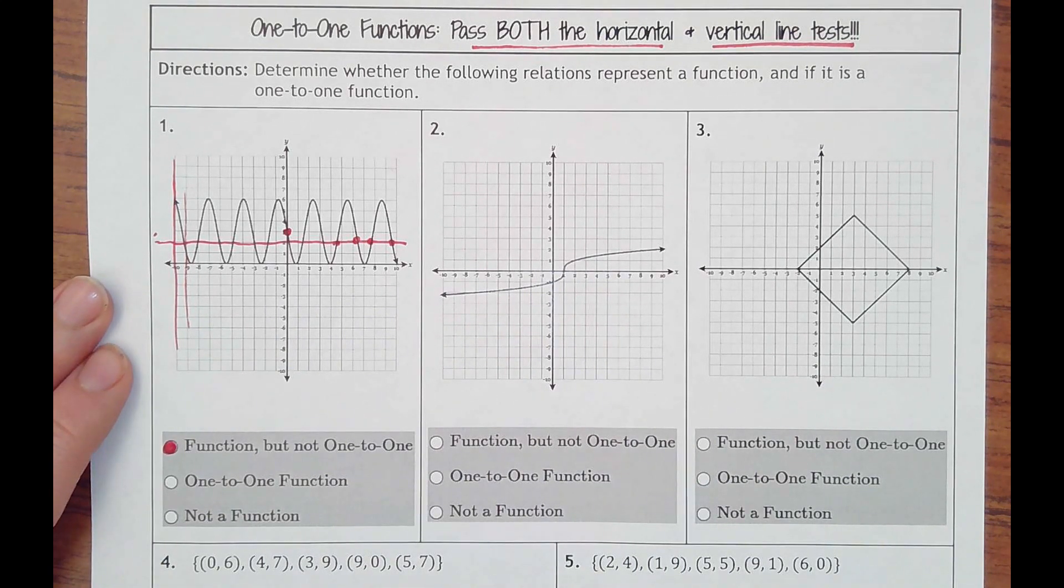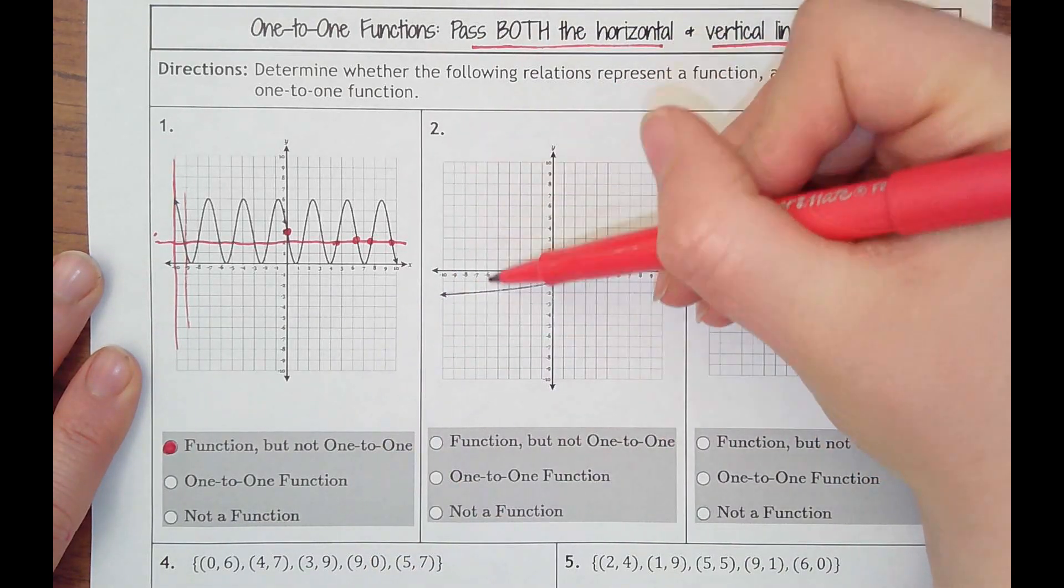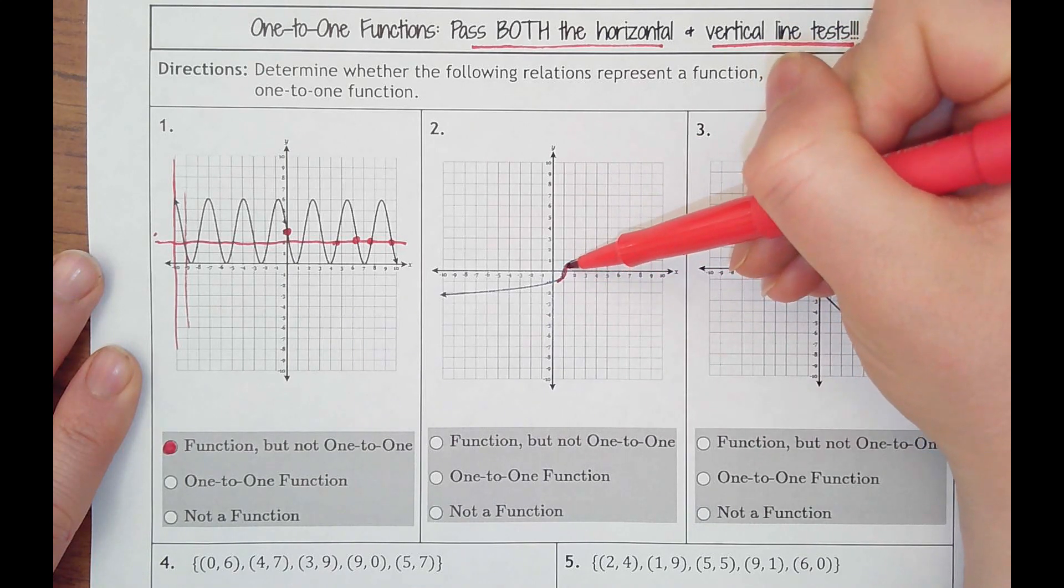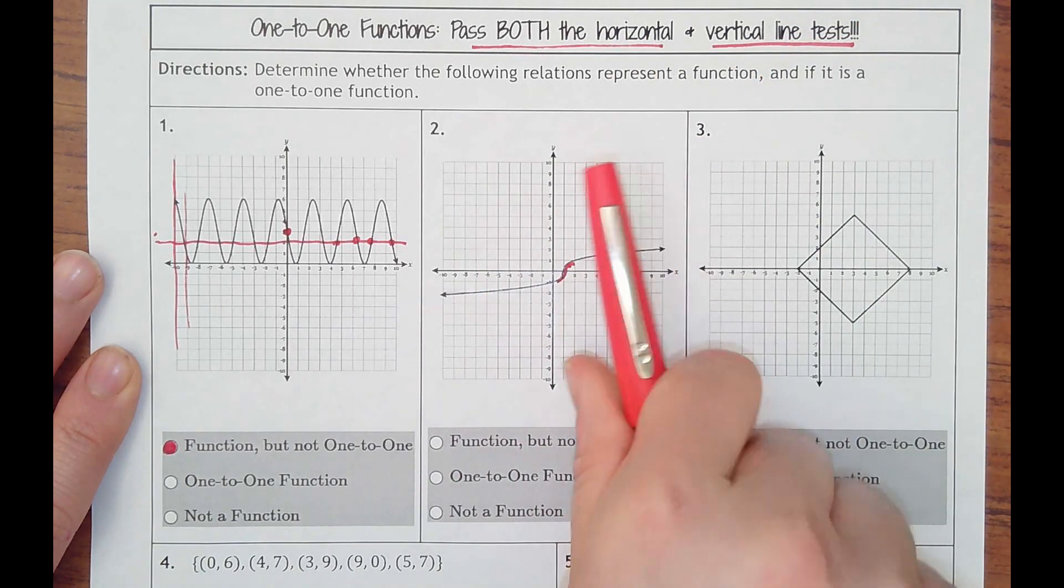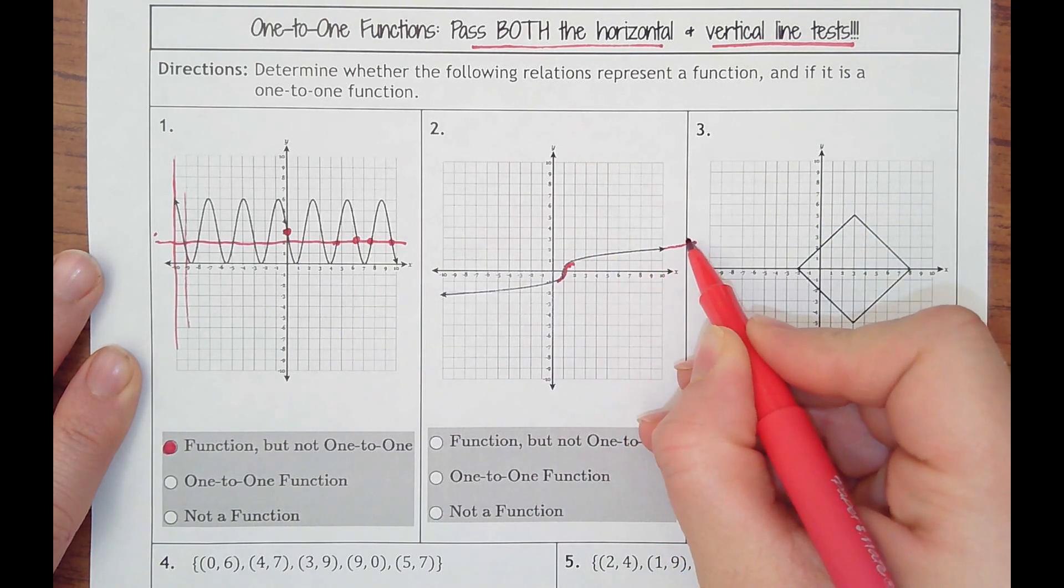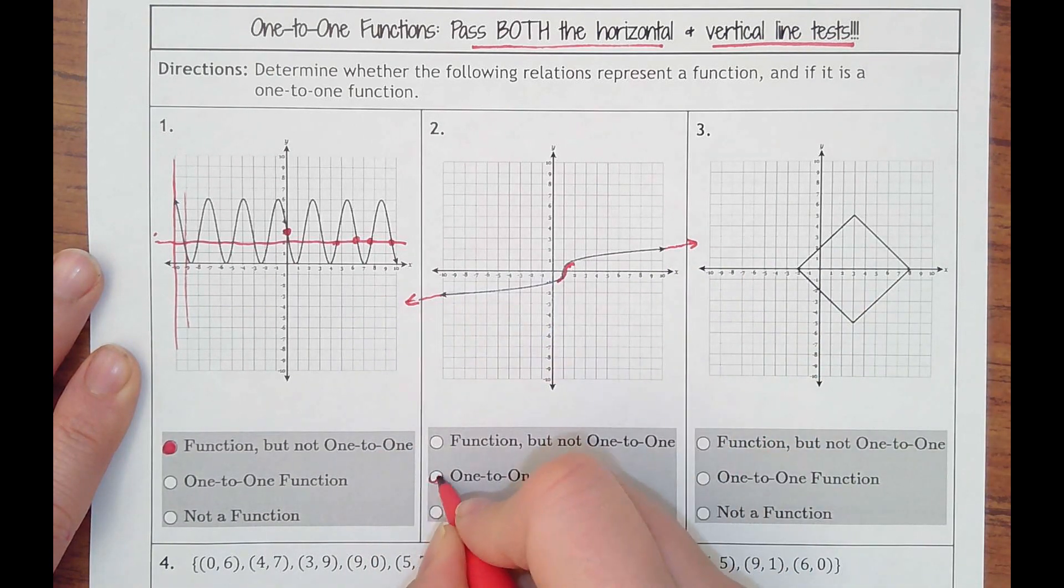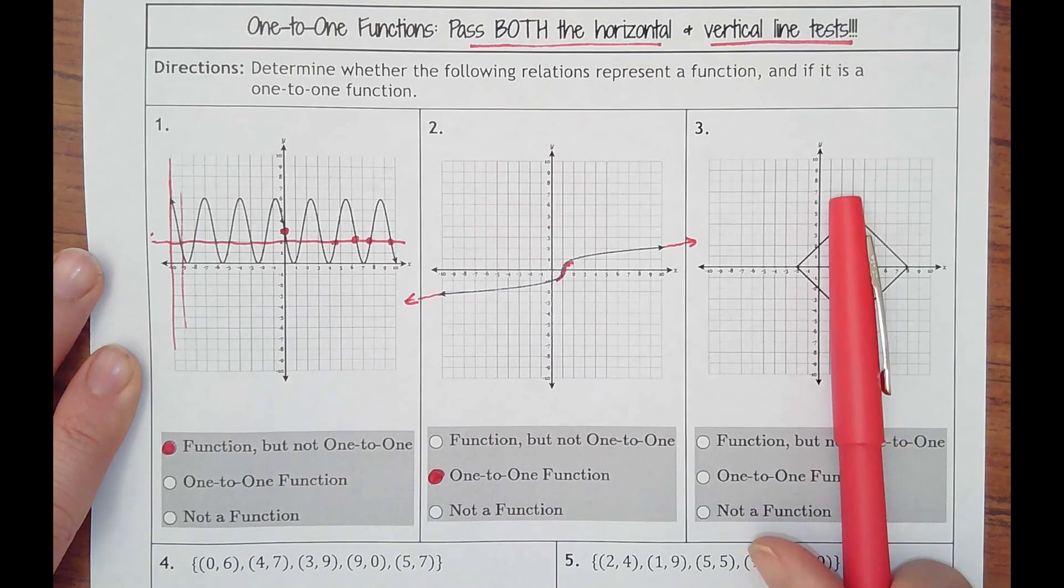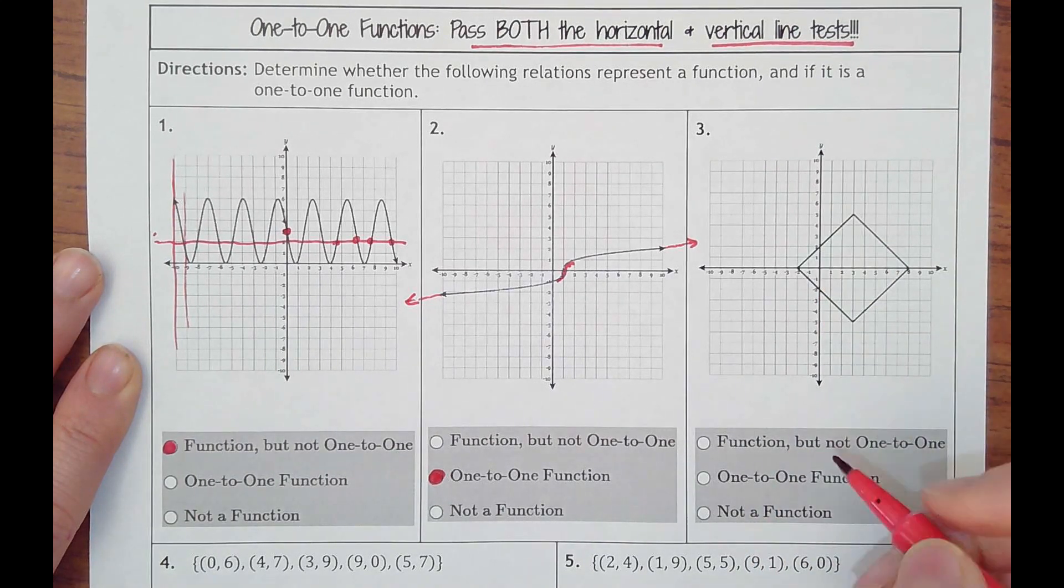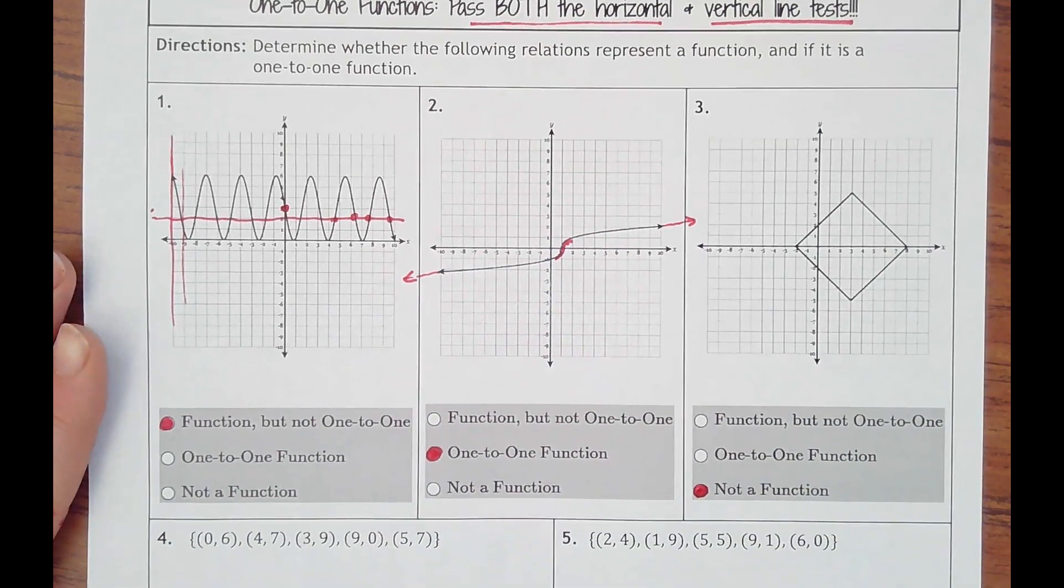Number two is a cube root function. This is going to pass the vertical line test. Even here, this looks like it's vertical, but it's curved. So it passes the vertical, and it actually passes the horizontal as well. These lines will go up just a little bit, and this line will go down just a little bit. So it is actually a one-to-one. The square is not even a function because it doesn't pass the vertical line test. So I don't have to worry about one-to-one. Obviously, it doesn't pass the horizontal line test either.